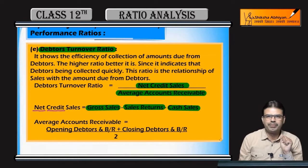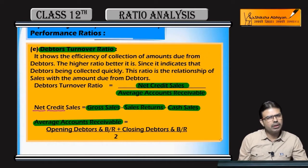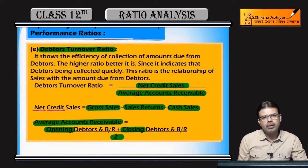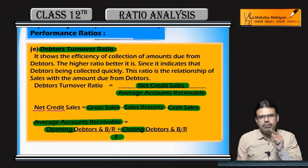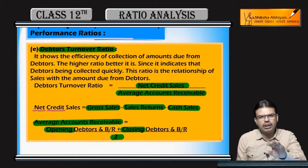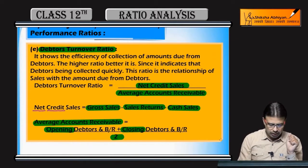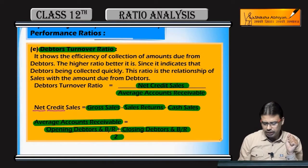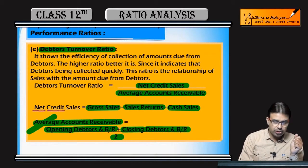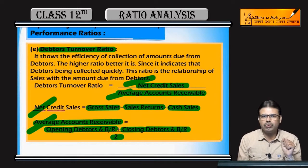This is the meaning of average accounts receivable — it is common sense. Opening debtors plus closing debtors divided by 2 gives average accounts receivable. So net credit sales divided by average accounts receivable gives the debtors turnover ratio.